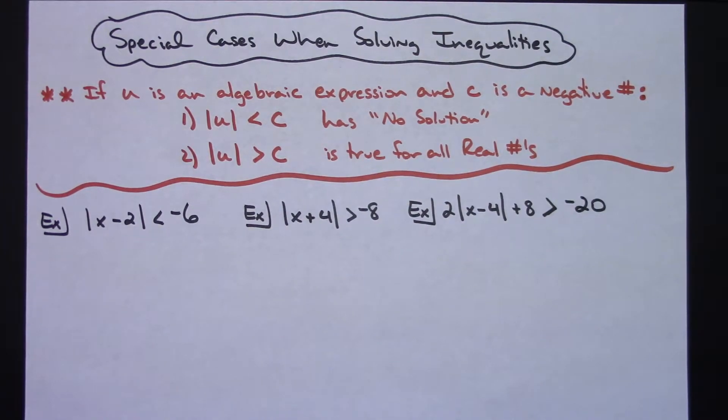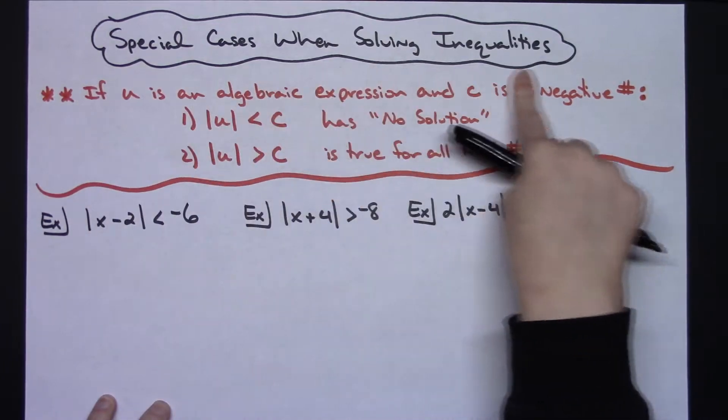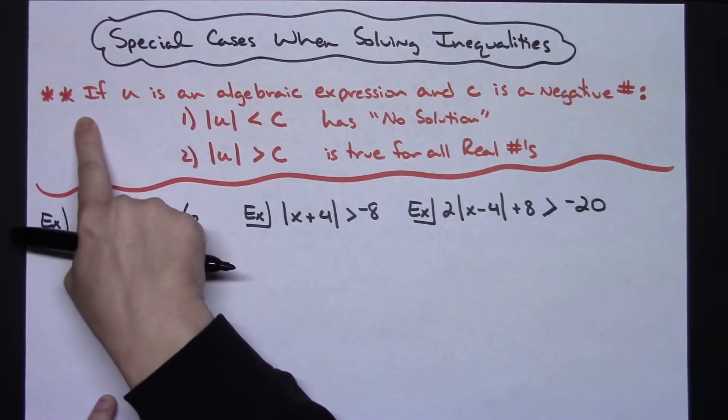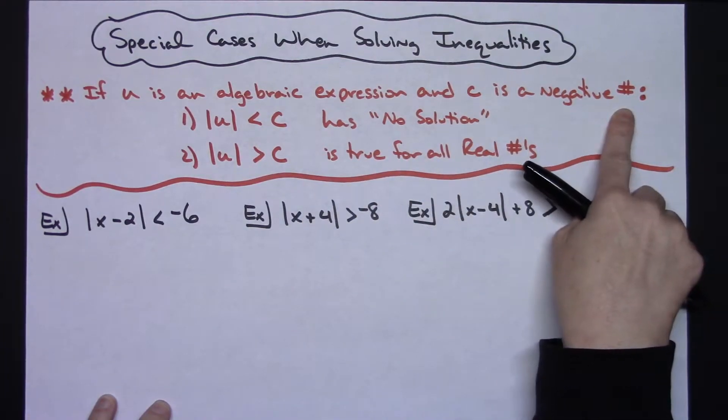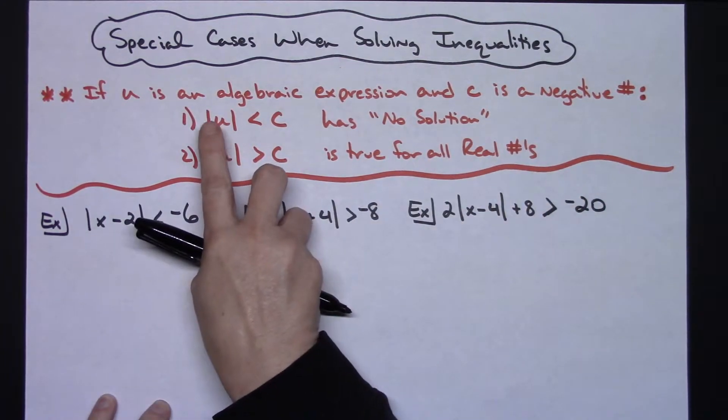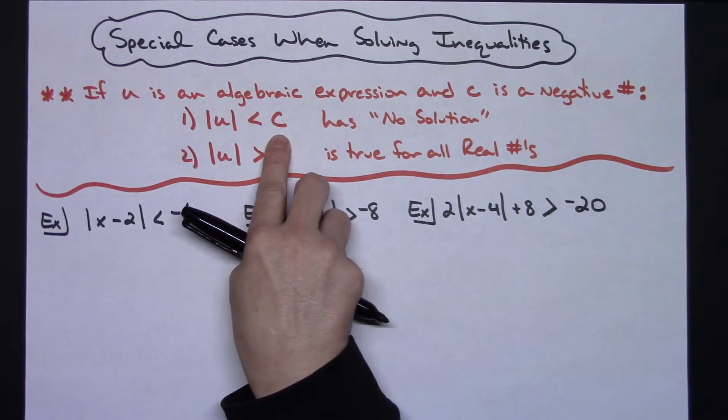In this video I'm going to take a look at just a couple of special cases whenever you're solving inequalities. There is a rule or an explanation for these special cases. If u is an algebraic expression and c is a negative number, then we're going to have the absolute value of an algebraic expression is less than some negative number.